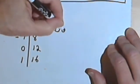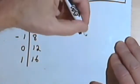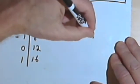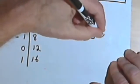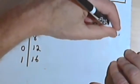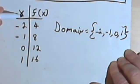So the domain for this function is just going to be a set of numbers. It's going to be the set of the numbers negative 2, negative 1, 0, and 1, the numbers that I have as input.